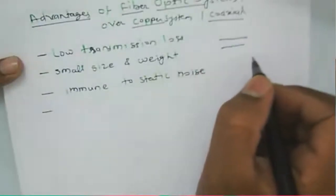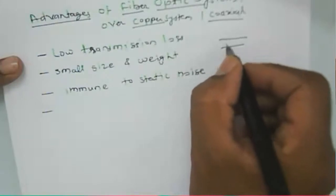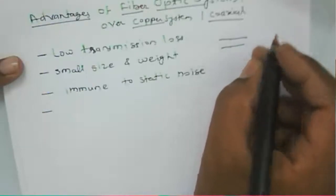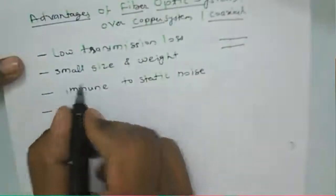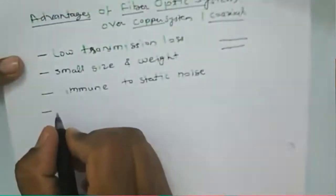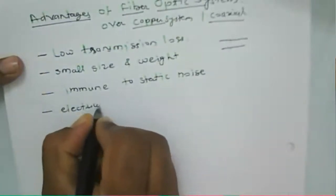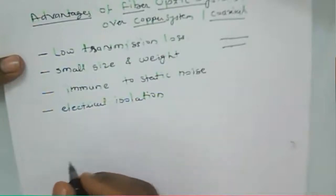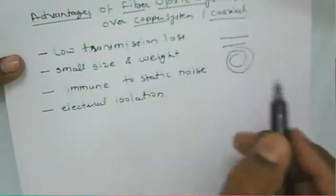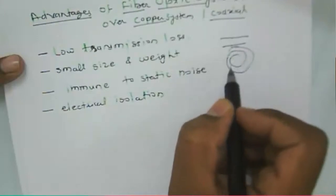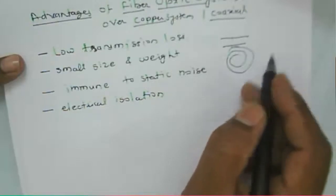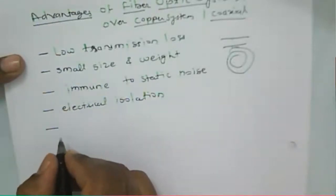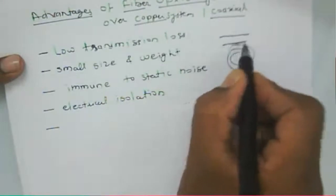When two-wire lines run in parallel, there may be crosstalk between the wires. Even with two coaxial cables, there may be crosstalk or interference. But in the case of a fiber optic cable, there is no crosstalk — electrical isolation takes place, and there is no interference from one fiber to another.